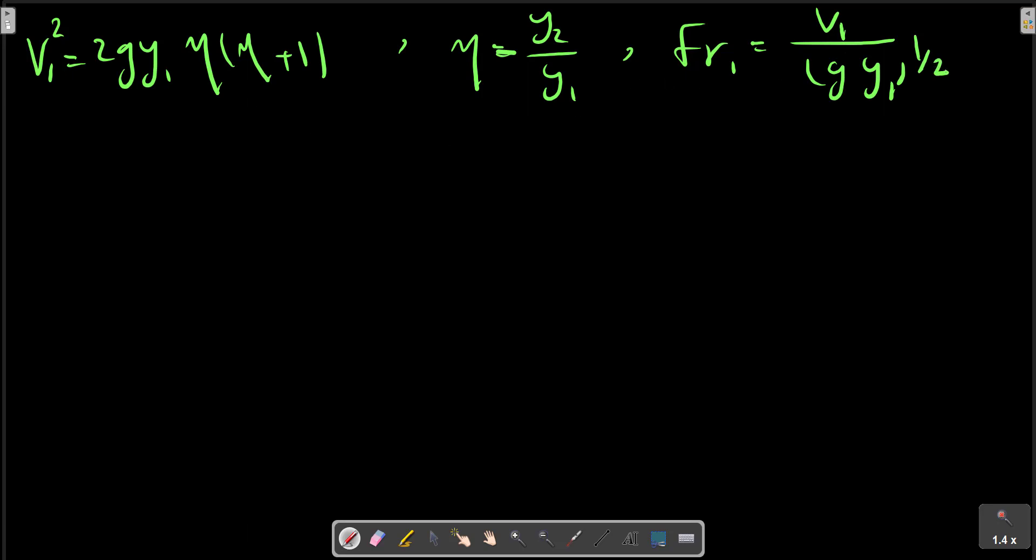Solving for eta, we can obtain this relation: y2 over y1 equals negative 1 plus the square root term with the Froude number at point 1.